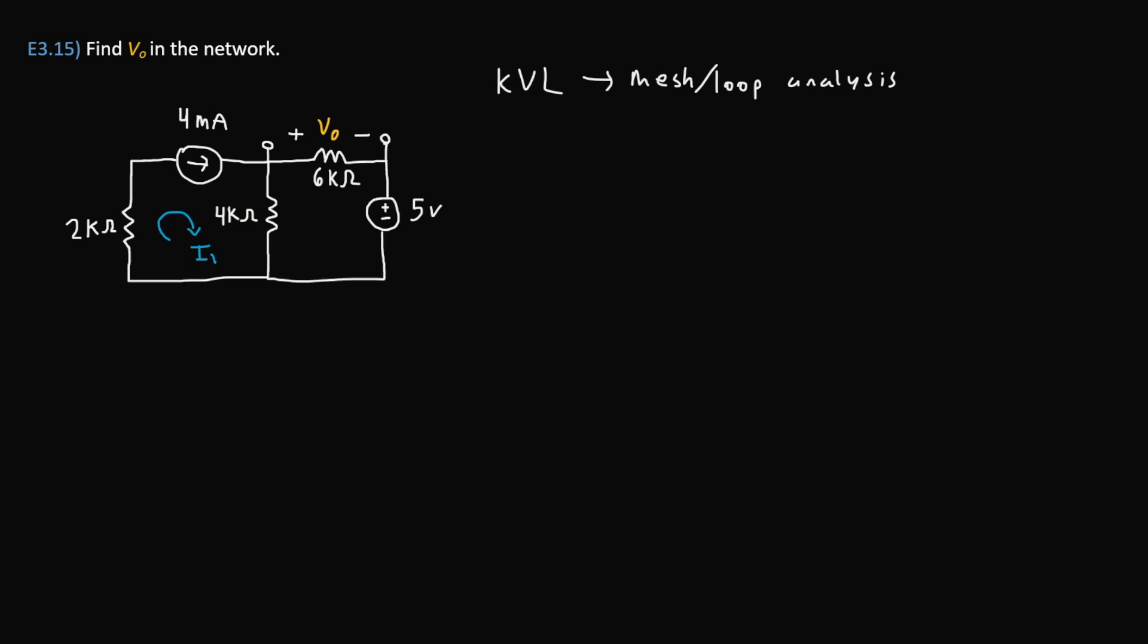Right here, you can see that the 4 milliamp current source is pointing to the right, and so a clockwise I₁ value will also point to the right in that spot. Hence, we won't have to deal with any negative numbers.